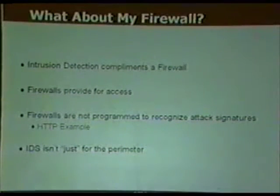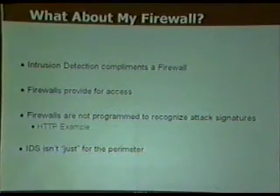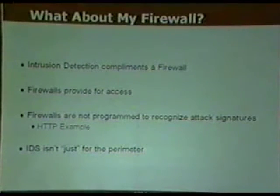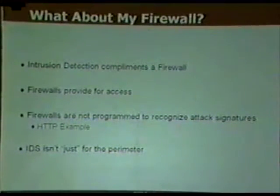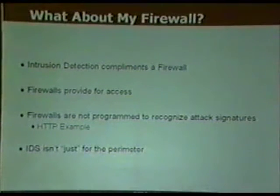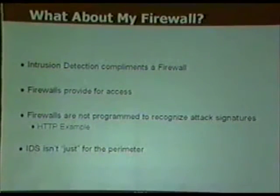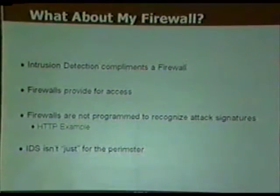Intrusion detection complements firewalls in that firewalls provide access control while IDS lets you recognize the types of traffic coming in. A good example: people coming to a conference have badges allowing entry, but they could be carrying something harmful in a backpack. Similarly, a firewall allows HTTP through port 80 to its end host, but if it's a malicious string, intrusion detection can pick that up. IDS isn't just for the perimeter — it can be used on any network segment with critical information resources.